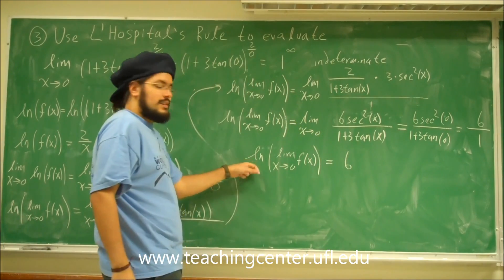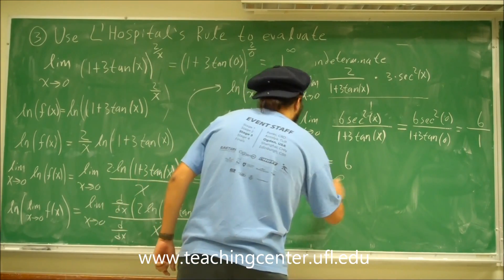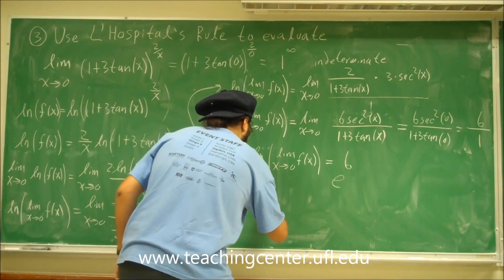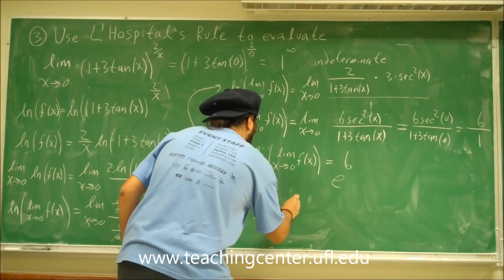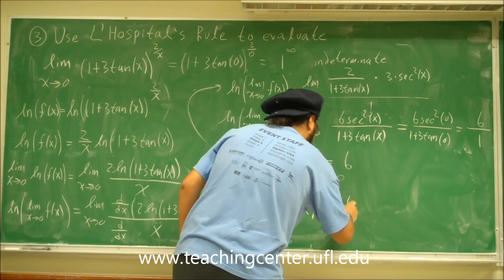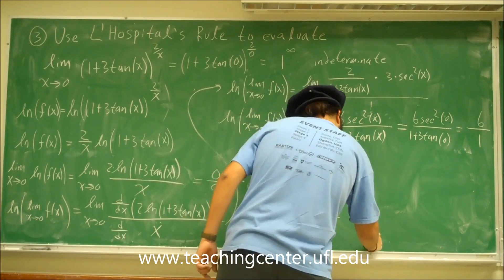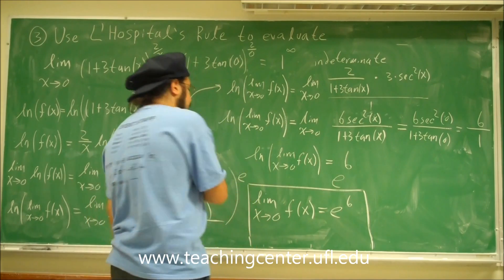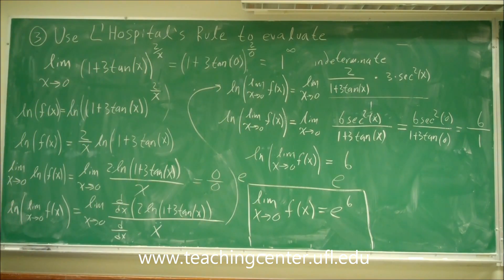To get rid of the ln, we introduce e to both sides. So the limit as x approaches 0 of f(x) equals e to the 6. That's the answer. Let's go over this a bit faster just to review.